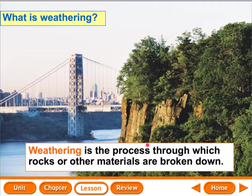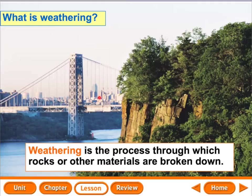Gravity is another factor. When rocks run down a slope, they bump into each other on the way down, and those bumps cause the rocks to break apart. Wind on exposed rock also causes weathering — it picks up small particles of dirt or sand, causes them to rub together, and they break apart on the surface. That's physical weathering caused by Mother Nature.